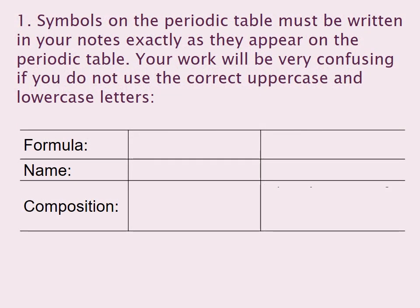Symbols on the periodic table must be written in your notes exactly as they appear on the periodic table. Your work will be very confusing if you do not use the correct uppercase and lowercase letters. For example, if you write capital C small o, that is called cobalt.